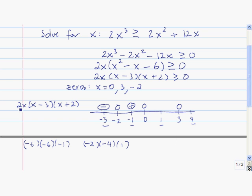Next we plug in 1. 2 times 1 is 2. So 1 minus 3 is -2. And 1 plus 2 is 3. So we have 2 times -2 times 3. That's a negative number.